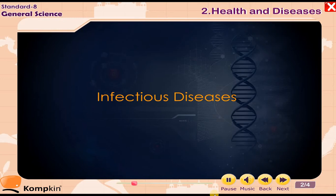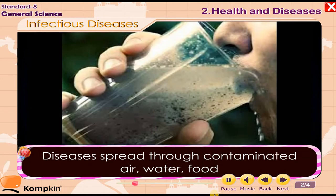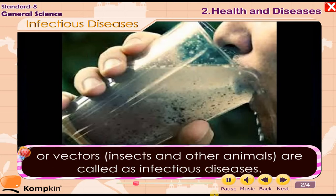Infectious diseases: Diseases spread through contaminated air, water, food, or vectors. Insects and other animals that spread such diseases are associated with infectious diseases.